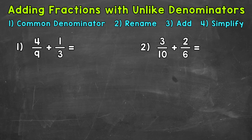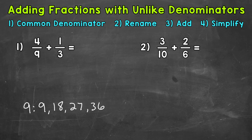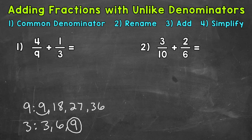Let's write out the multiples of nine and three. I'll come to the bottom of the screen where I have some extra room. We'll start with nine: nine, 18, 27, 36. I would suggest writing out four or five multiples of each and see if you have any common multiples — if not, you can always extend your lists. Now let's do three: three, six, nine. And it looks like we have a common multiple of nine, and more specifically, that's going to be the least common multiple.